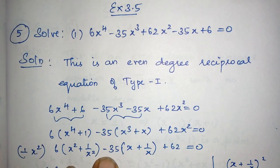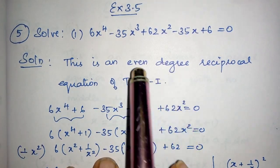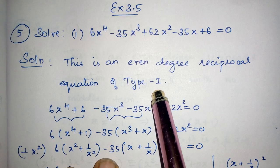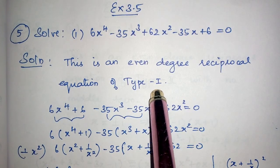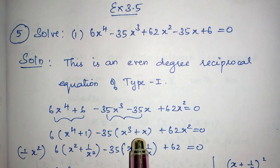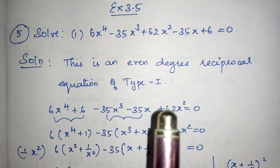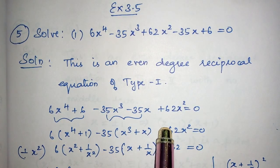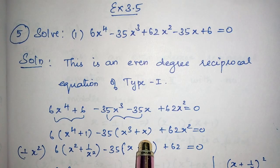Previously in the concept I taught you that in even degree type 1, what we have to do is make the terms as x + 1/x or x - 1/x. That is what we are going to do here. We do not have any direct solution. How to do that I will explain.